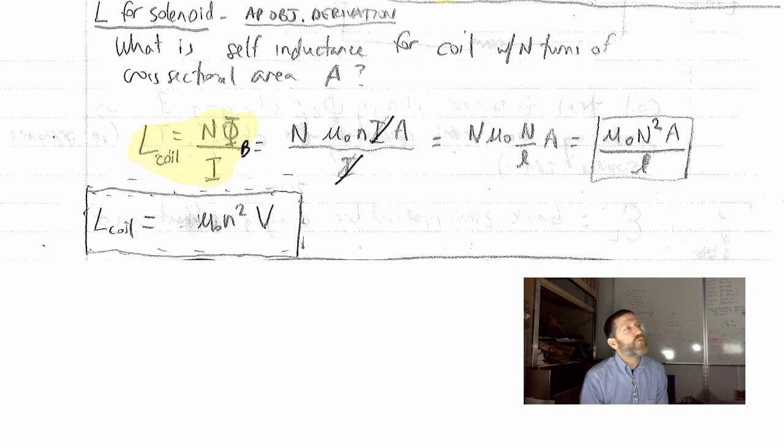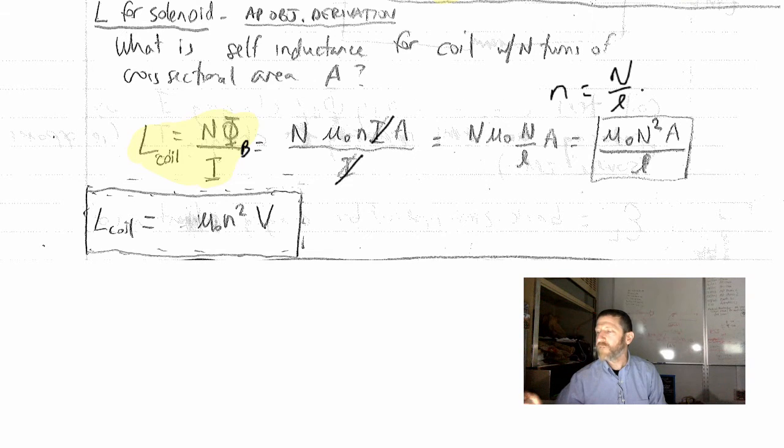What is the relationship between little n, the number of turns per unit length, and big N, the number of turns? Little n is just big N over l, like that.